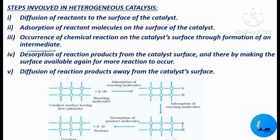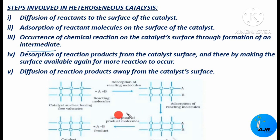The catalyst will now be free enough to accept new reactant species on the surface. The final step is diffusion of the reaction products away from the catalytic surface. The product is formed — a bond between A and B — and it diffuses away from the surface of the catalyst, leaving the catalyst free with free valences to accept new reacting species.